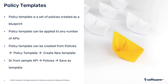A policy template is a set of policies that are created as a blueprint. A policy template can be applied to any number of APIs. It can be created from Policies > Policy Template > Create New Template, or it can be created from the API by going to Policies and clicking on Save as Template.